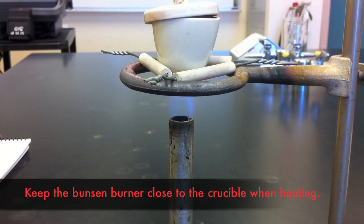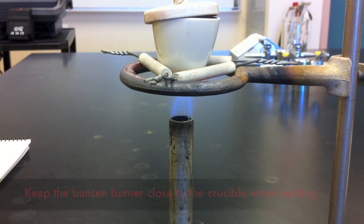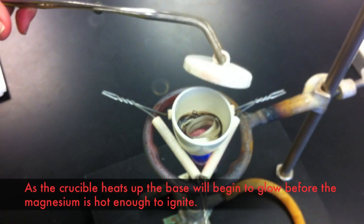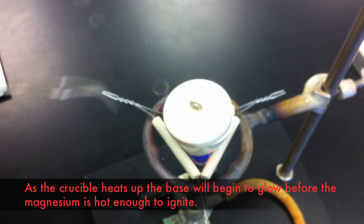In order for this reaction to proceed properly, you need to make sure that the Bunsen burner is close enough to the crucible to heat it well. The high temperature will cause the magnesium to ignite, though first the crucible will begin to glow with the heat.